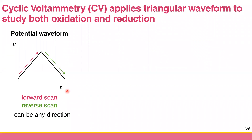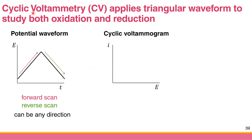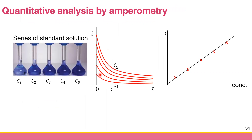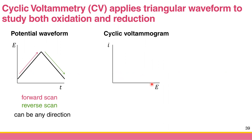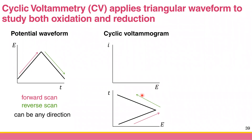This is the waveform of cyclic voltammetry. What you get from scanning this potential waveform is called a cyclic voltammogram — the technique is cyclic voltammetry, and the output is called a cyclic voltammogram, though sometimes we call it CV as well. Since we vary the potential, we get a plot of current against potential. From amperometry we plot I versus T, but in voltammetry we plot current against potential.